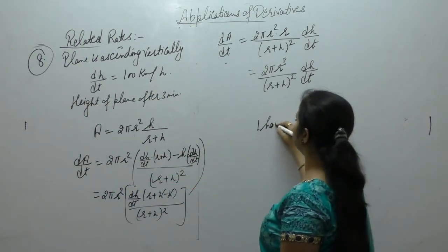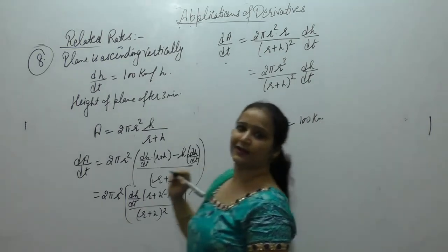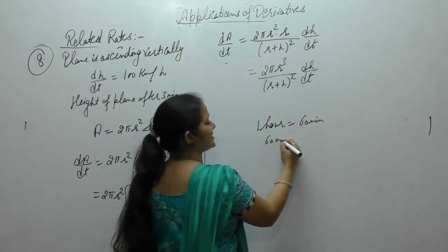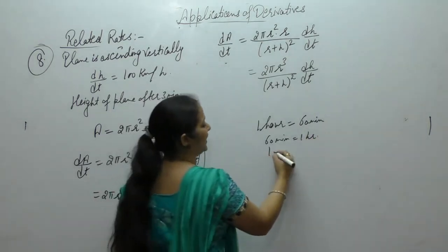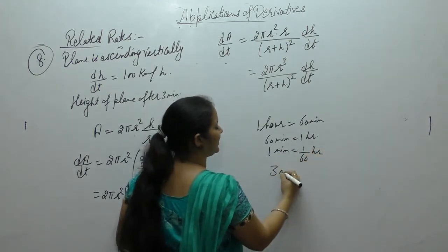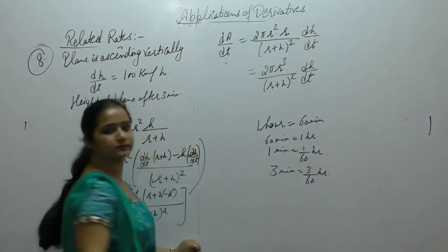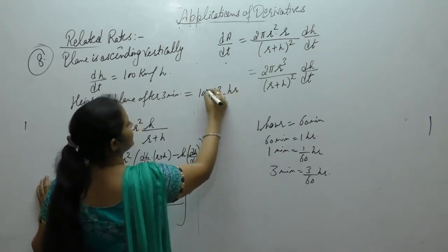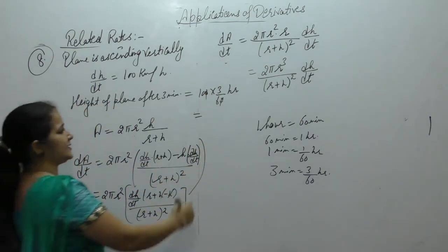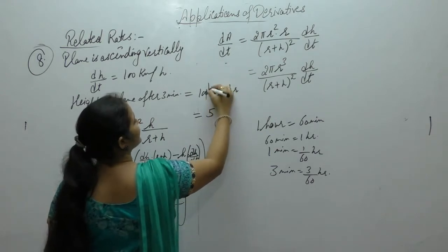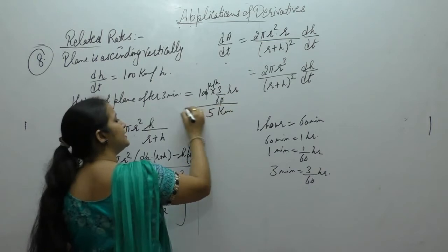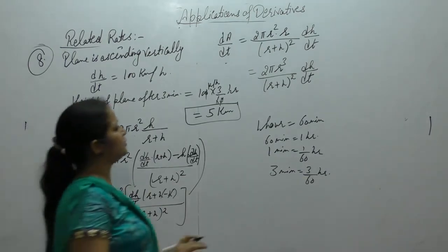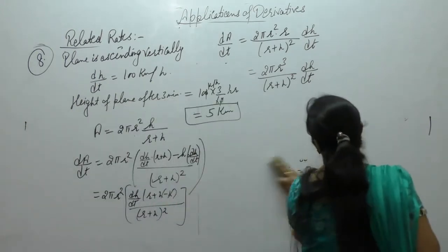Now this is in 1 hour height: 1 hour equals 100 km. 60 minutes equals 1 hour, so 1 minute equals 1 by 60 hour, and 3 minutes equals 3 by 60 hour. So height equals 100 into 3 by 60. The zero cancels: 30 by 6 that is 5. So we get 5 km. When t equals 3, then h equals 5.